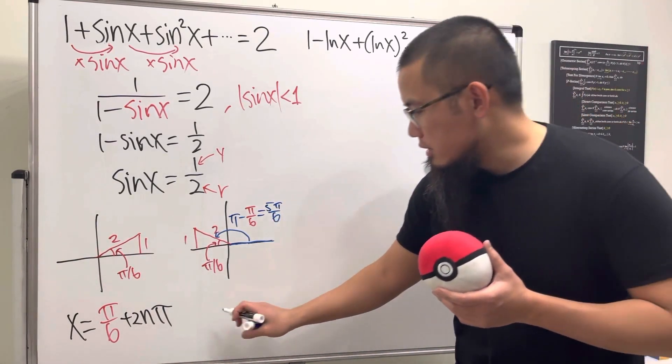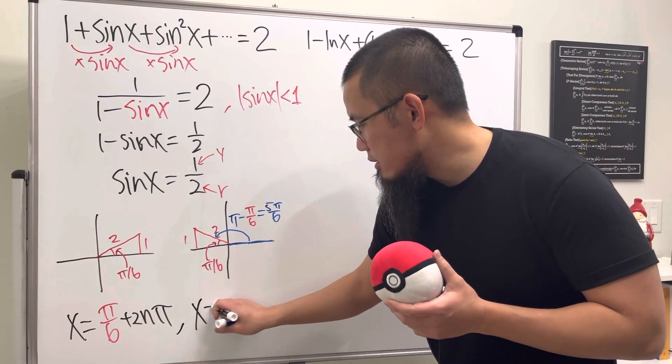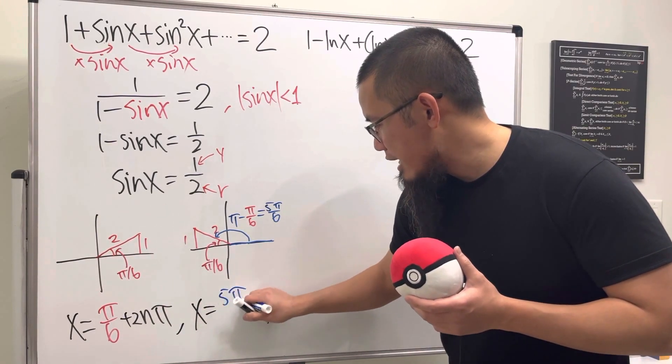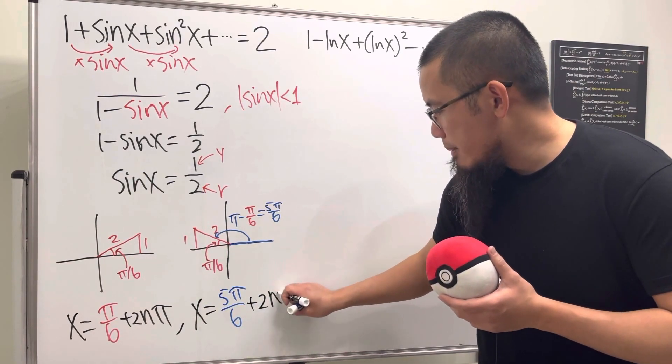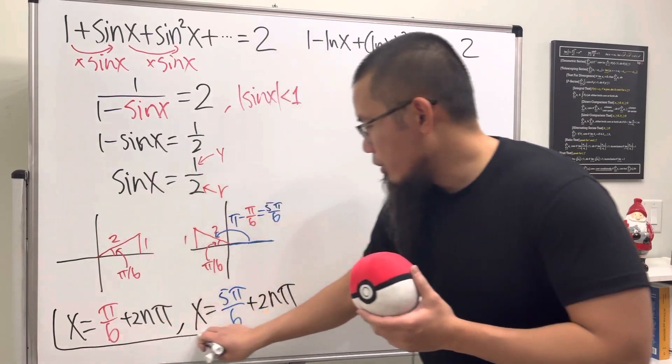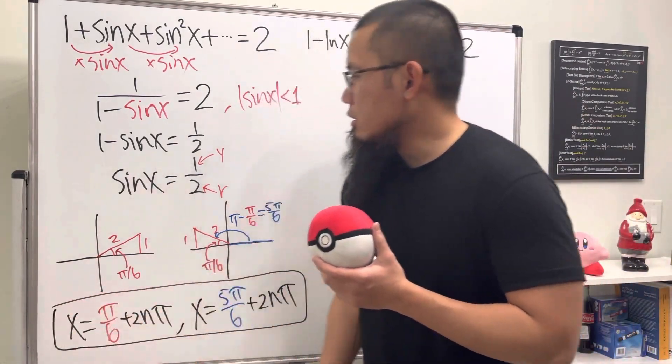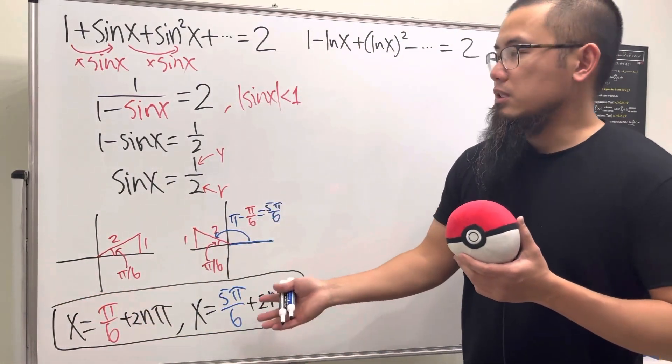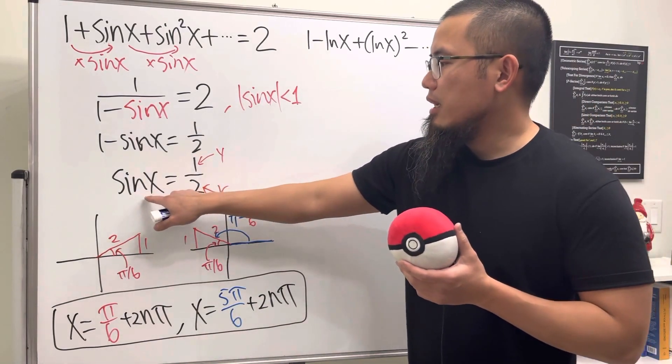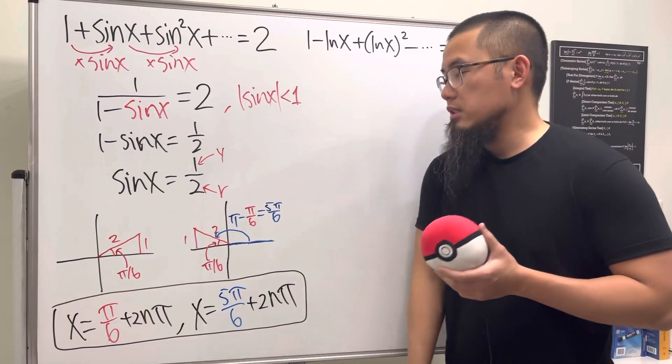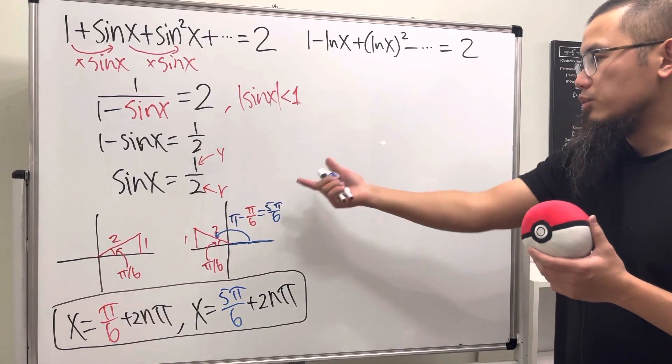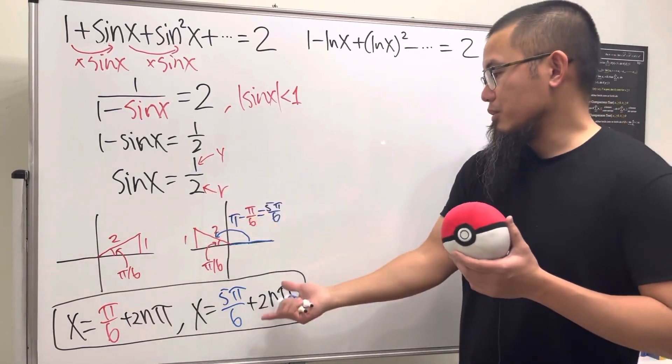And of course we have the π, so for the second one we started at 5π over six. So let me just put it down here: we have 5π over six + 2nπ, because we just need sin x to be one half and it does work, it does work out very nicely.